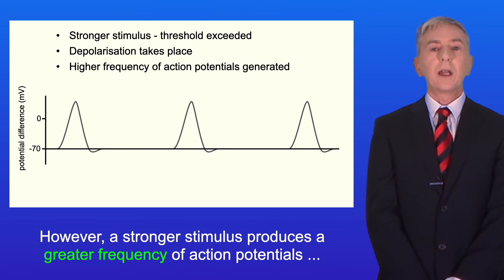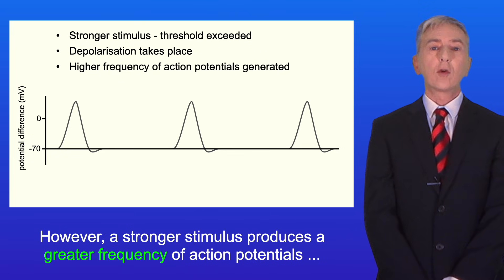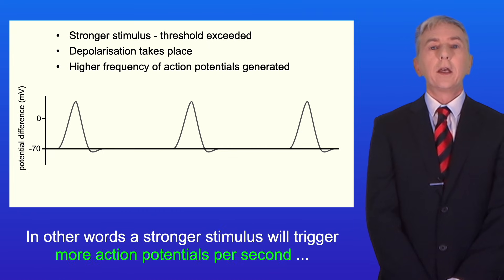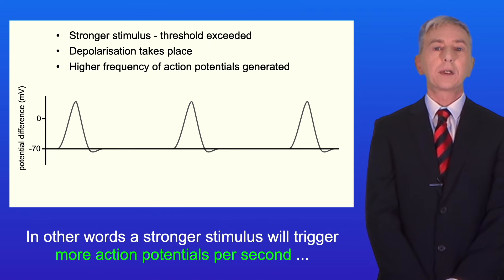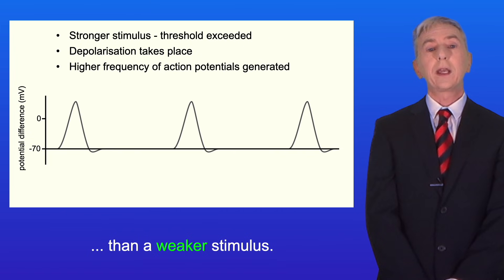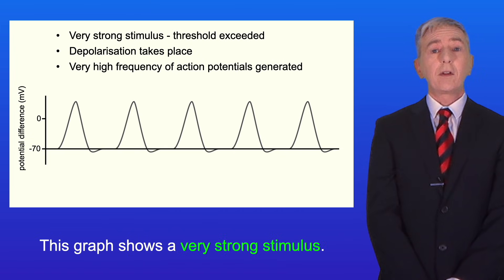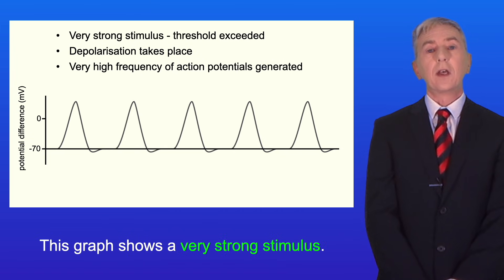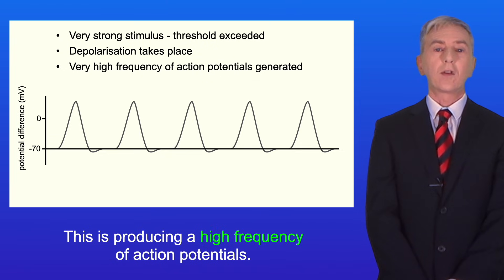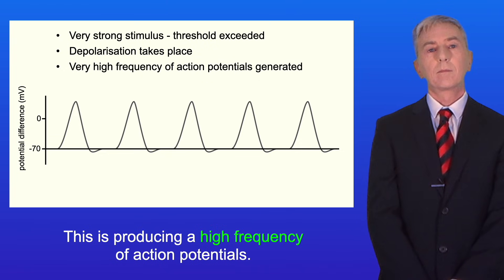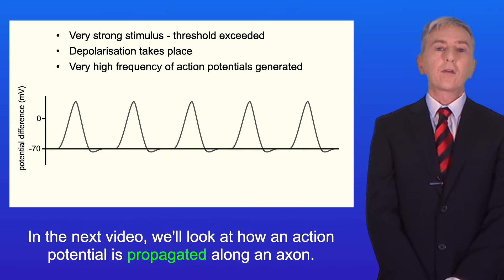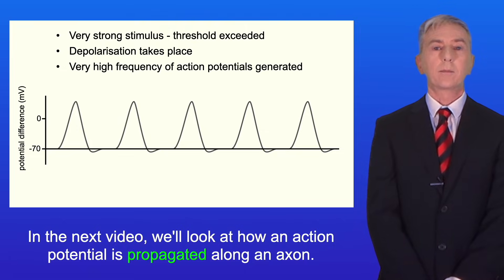However, a stronger stimulus produces a greater frequency of action potentials than a weaker stimulus. In other words, a stronger stimulus will trigger more action potentials per second than a weaker stimulus. This graph shows a very strong stimulus producing a high frequency of action potentials. In the next video we look at how an action potential is propagated along an axon.